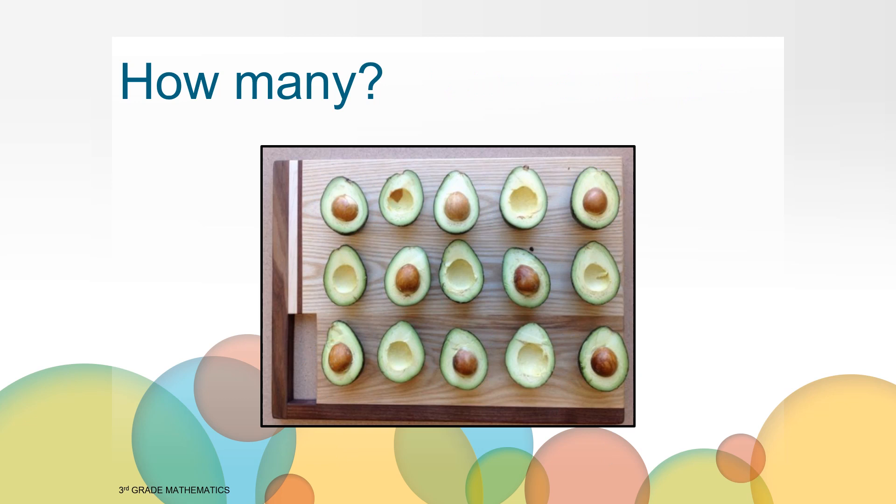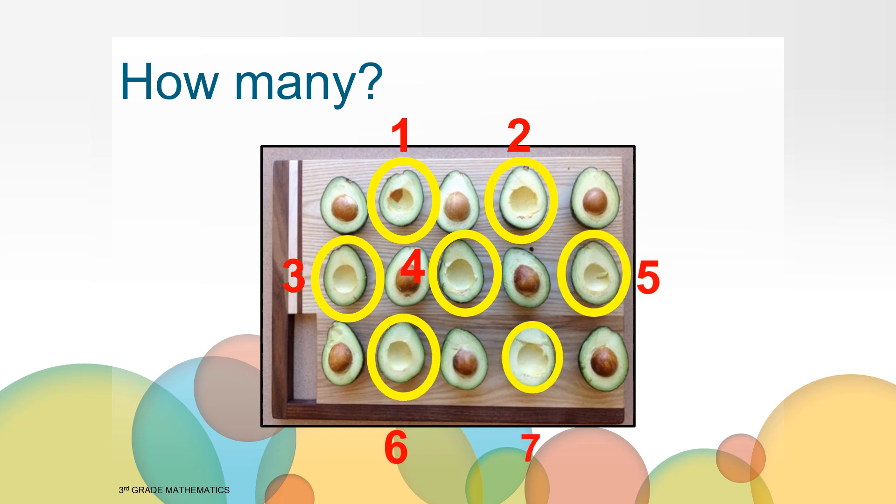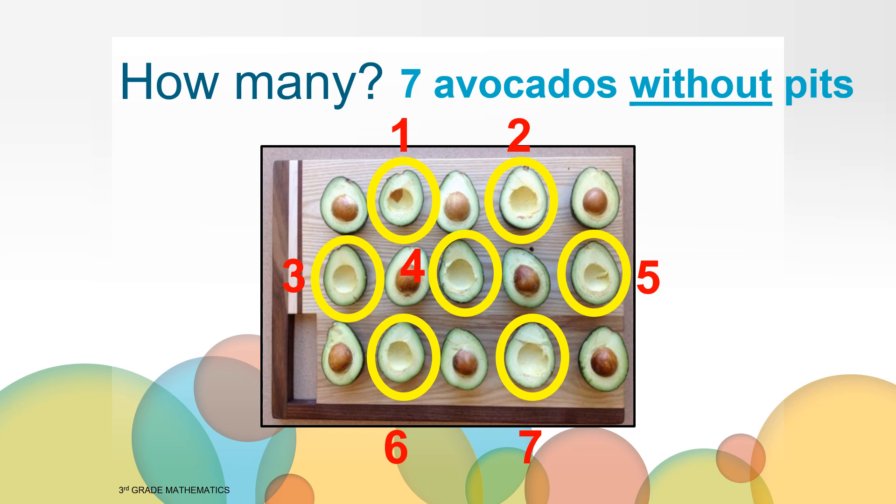We can count how many do not have pits. Let's do that. Count with me: one, two, three, four, five, six, seven. Now we can see that there are seven avocado halves without pits.